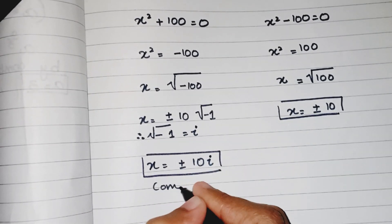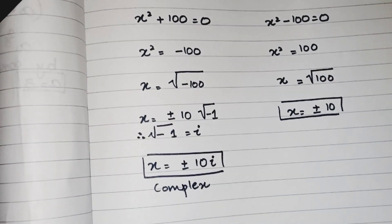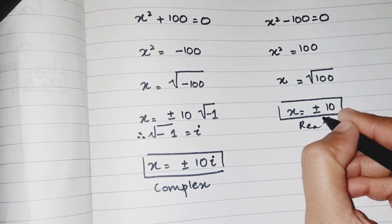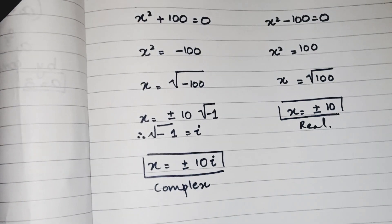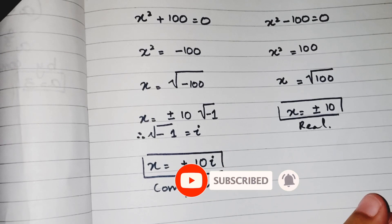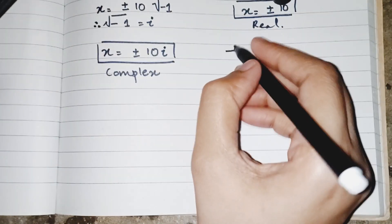Now we have four values of x. These will be the complex values because they were having iota, and these values will be the real number values. Now we just check by putting any one of them into the original question and just seeing that either our answer will justify the question or not.